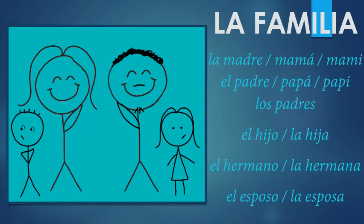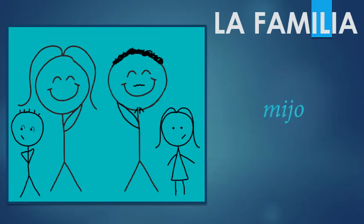Now for a few quick cultural notes. Spanish speakers tend to use these family titles much more frequently than we do in English. For example, I still refer to my parents as mom and dad, but I use my siblings' names. In Spanish, though, you're more likely to hear brothers and sisters calling each other hermano or hermana. This is even more true when it comes to hijo and hija — my son and my daughter are used so frequently that they developed their own spelling: mijo and mija. Hermano can also be used to refer to your buddies or bros, not too different than in English, although this is less common with hermana.